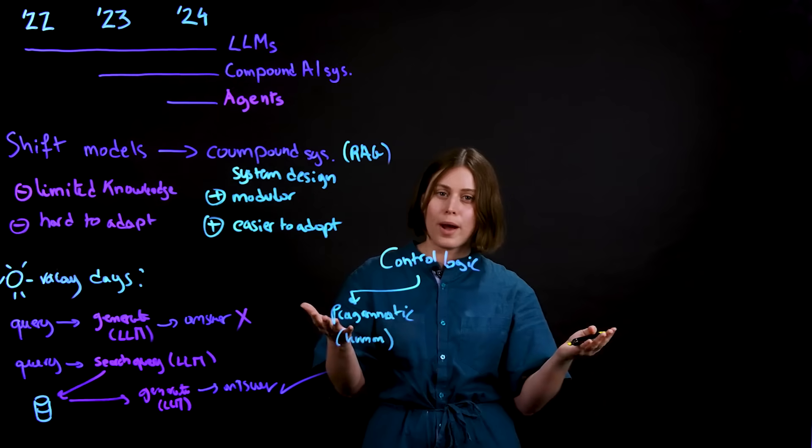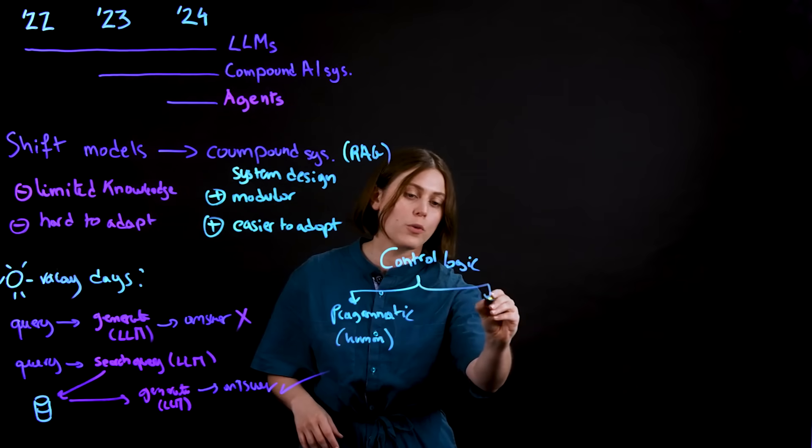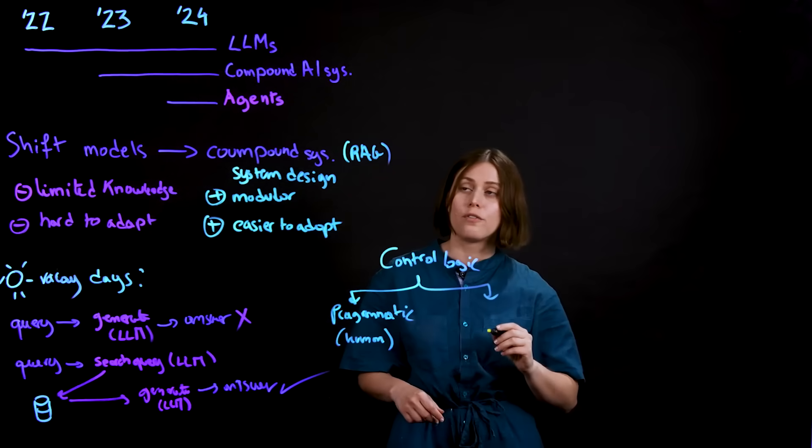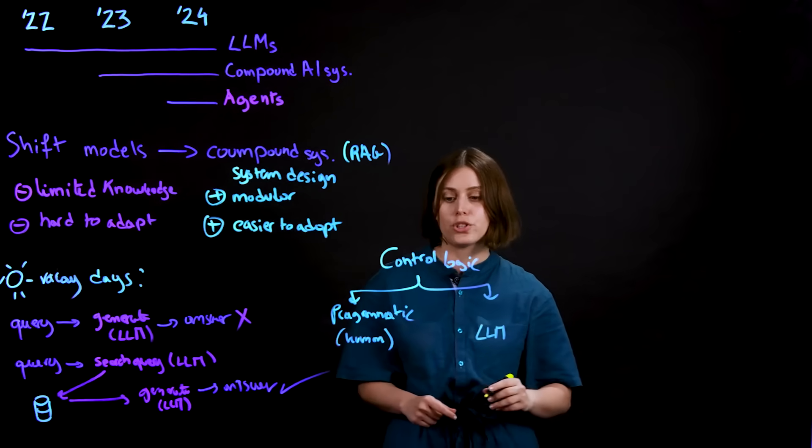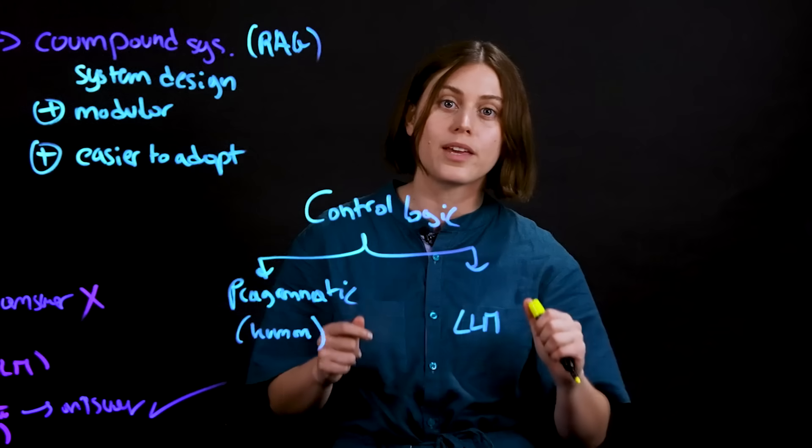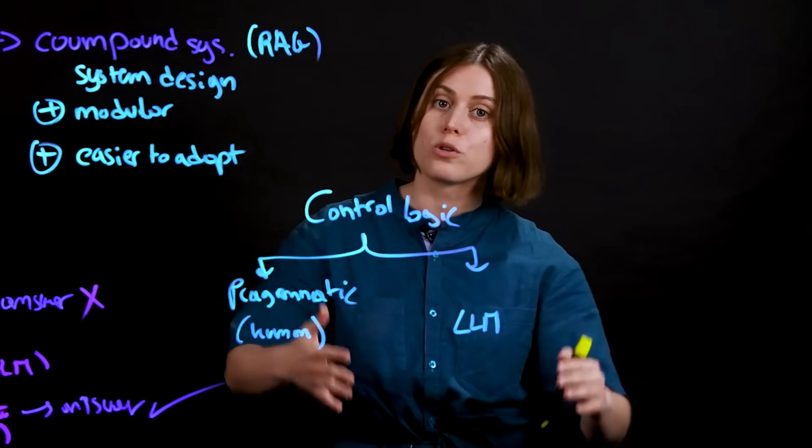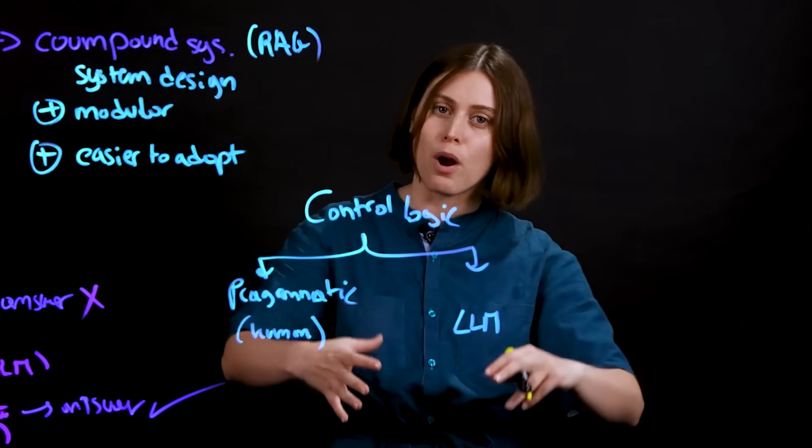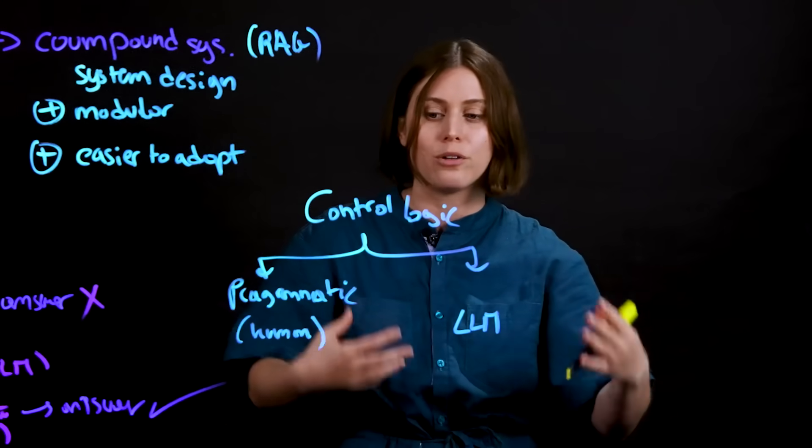Now let's talk about where do agents come in. One other way of controlling the logic of a compound AI system is to put a large language model in charge. This is only possible because we're seeing tremendous improvements in the capabilities of reasoning of large language models. You can feed them complex problems and you can prompt them to break them down and come up with a plan on how to tackle it.